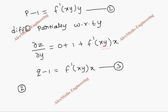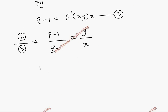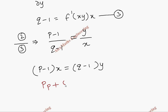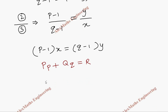We are going to divide the second expression by the third expression. This gives (P minus 1) by (Q minus 1) equals — the f dash term cancels on both sides — leaving y by x. Now cross-multiplying: (P minus 1) times x equals (Q minus 1) times y. Expanding this: Px minus x equals Qy minus y.